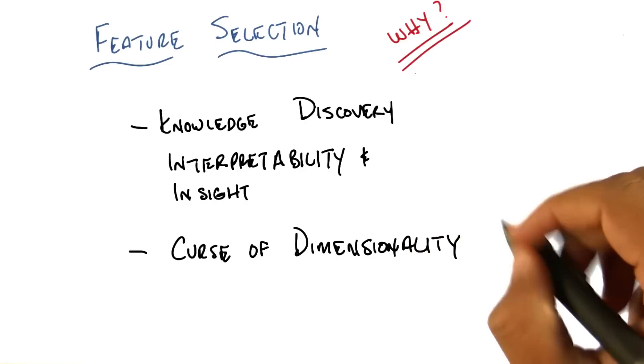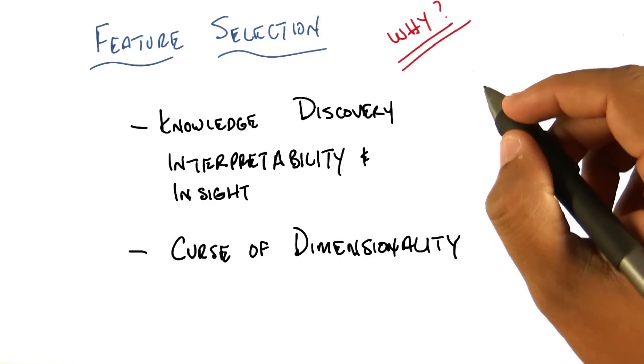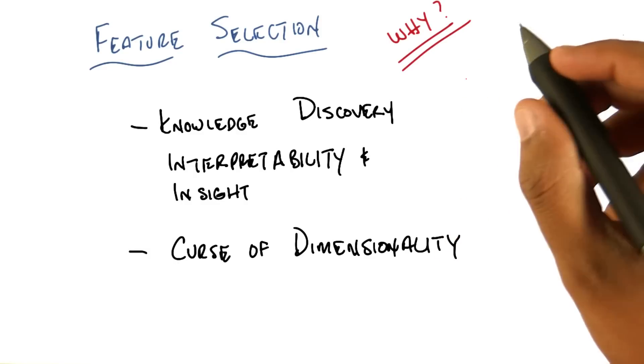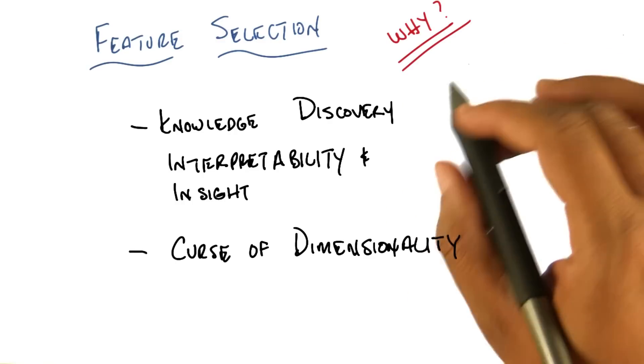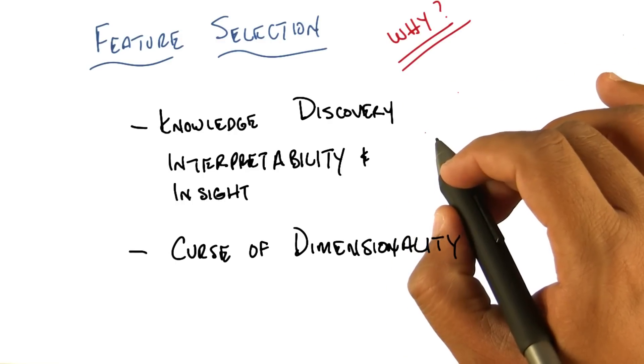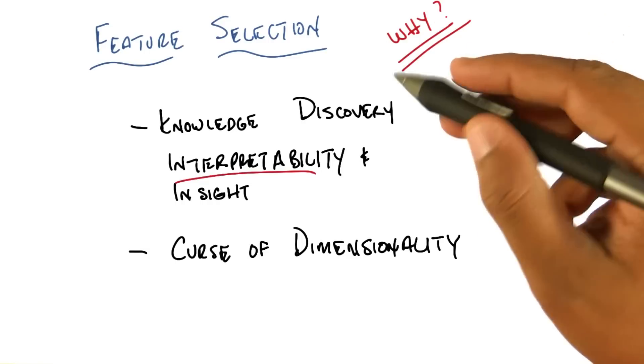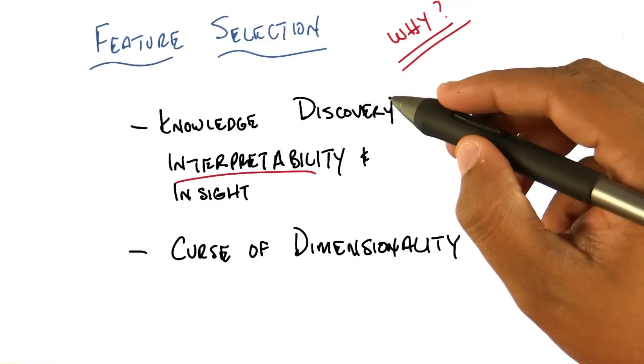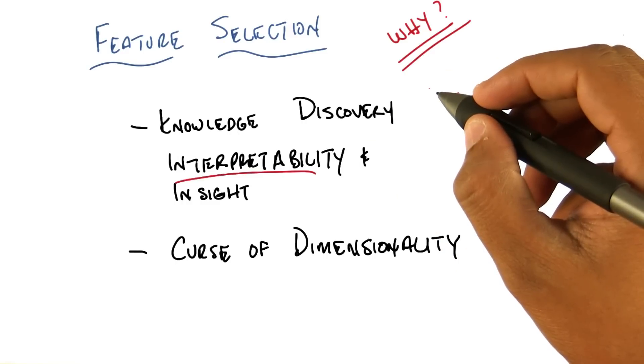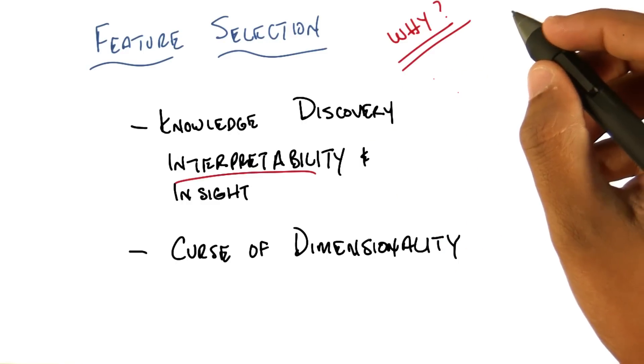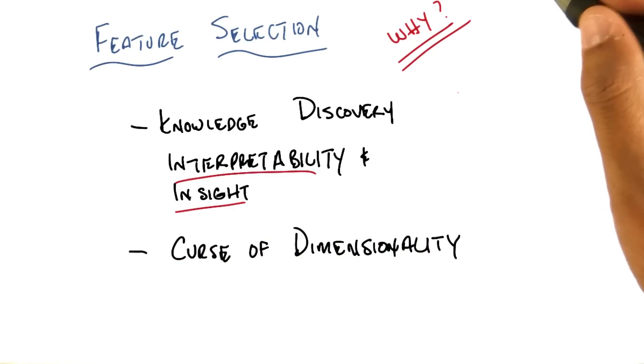One is really about human beings and the other is really about machines and machine learning algorithms. And the first one really boils down to what I'll just call knowledge discovery, right? It is often useful when you're thinking about a set of data and a problem to be able to interpret the features. To figure out which subset of features that I've been keeping track of or that I'm using in my sensors actually matter. So really, the feature selection problem, for what other reasons you might think of doing it, are often good for interpretability and for insight.